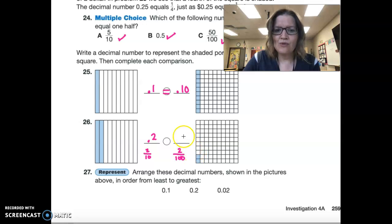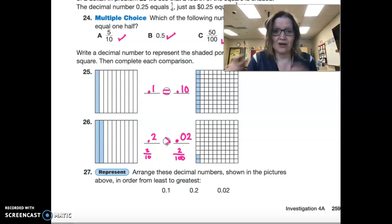This is how we write it as a fraction. We put our decimal number, and then we say 0 and 2. This is our tenth. So, that is how we know that this is 2 hundredths. And we can clearly see that this is the larger amount.